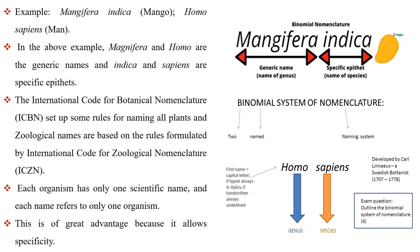In the above example, Mangifera and Homo are the generic names, and indica and sapiens are the specific epithets. The International Code for Botanical Nomenclature (ICBN) set up some rules for naming all plants, and zoological names are based on the rules formulated by the International Code for Zoological Nomenclature (ICZN). Each organism has only one scientific name and each name refers to only one organism. This is of great advantage because it allows specificity.